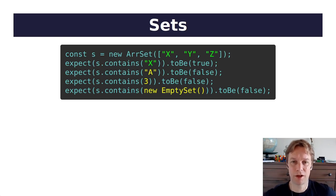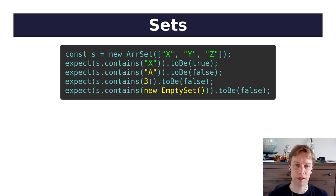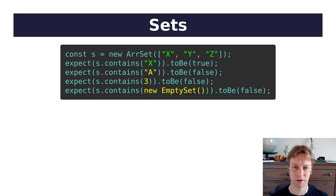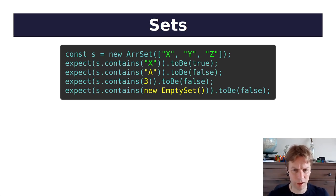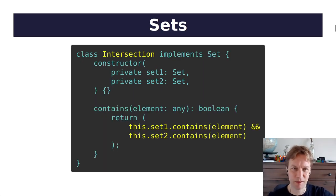Let's look at another implementation. ArraySet is a class where if you give it an array of things, those things are in the set and everything else is not. In this case we've passed in some strings, so this set contains x, y, and z, and it's not going to contain 'a' or 3, or indeed a new empty set — where empty set is some other set class we've created which has nothing in it, which we'll get to.